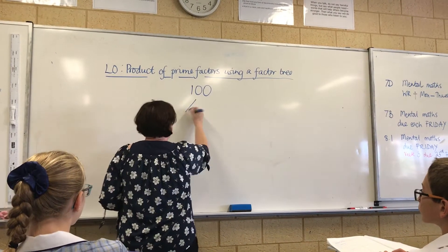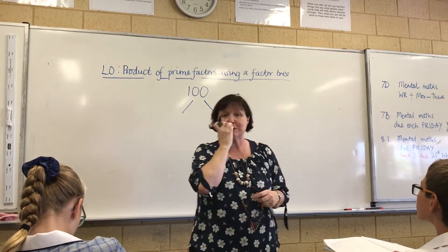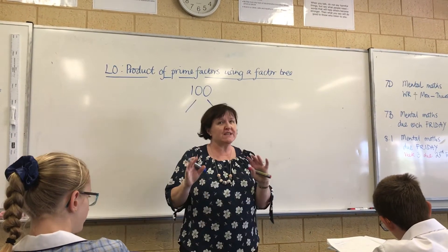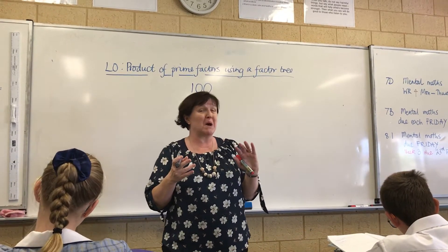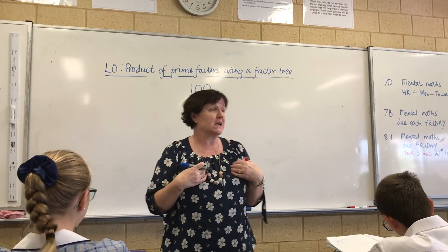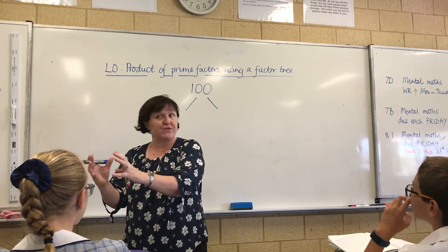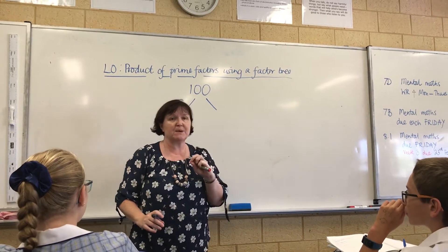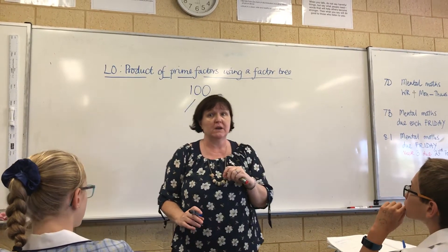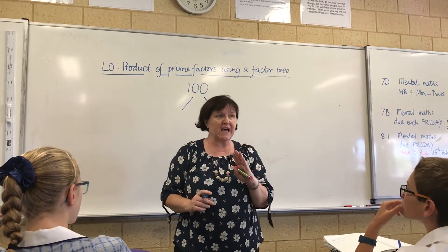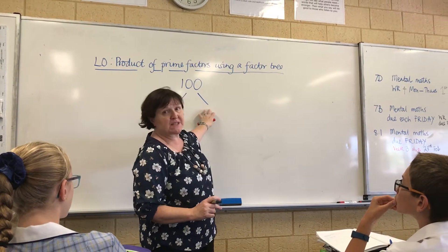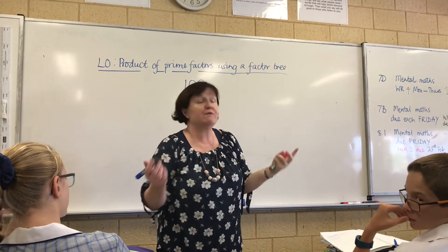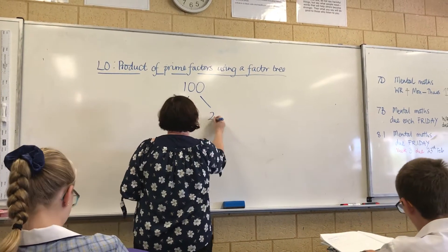We always start with two branches. Now what we've got to find — and this is where it can get a little bit tricky because your answer might be slightly different to mine — it doesn't actually matter, we'll end up with the same answer but we might get there in a different direction. You've got to think of a multiplication sum — not addition, multiplication — that when you multiply the two numbers together the answer is 100. Chase says 50 times 2, that's right. So we've got 50 times 2.